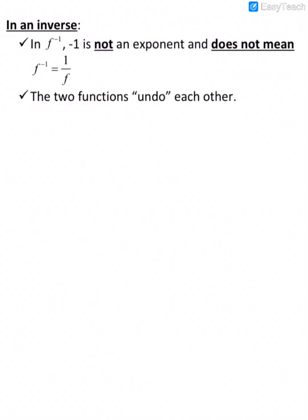In this notation, the negative 1 is not an exponent and it doesn't mean 1 over f. When dealing with inverses, the two functions undo each other.